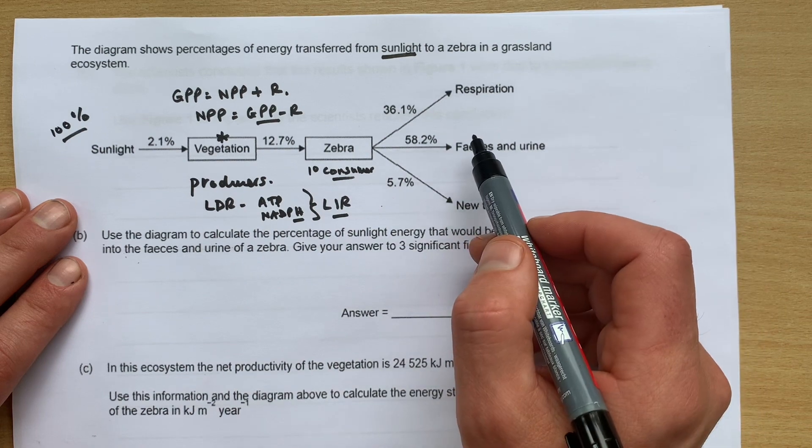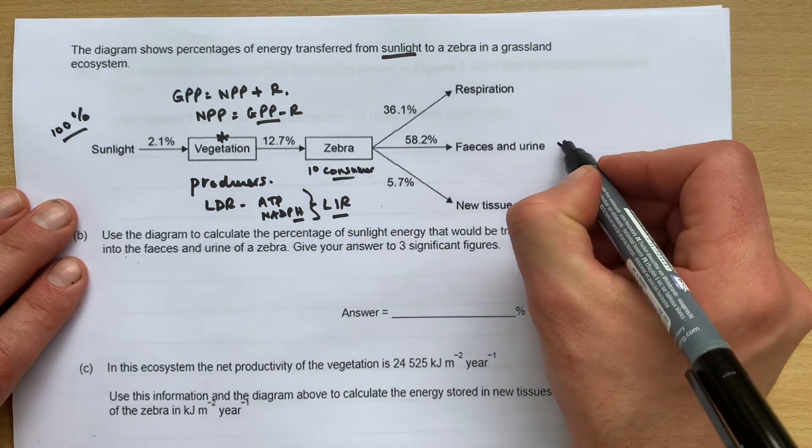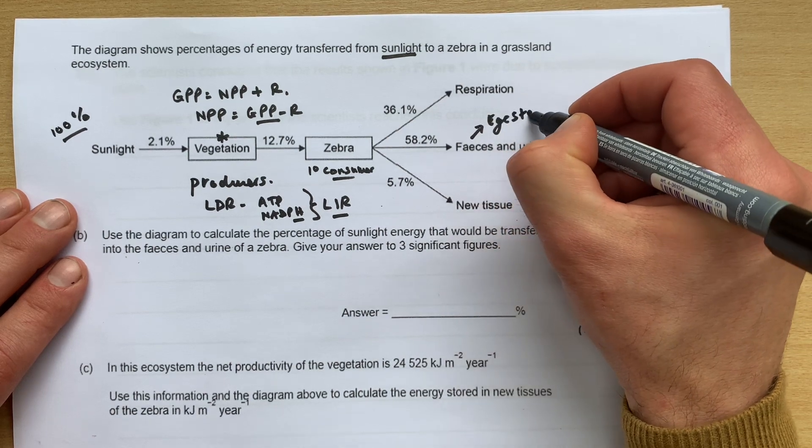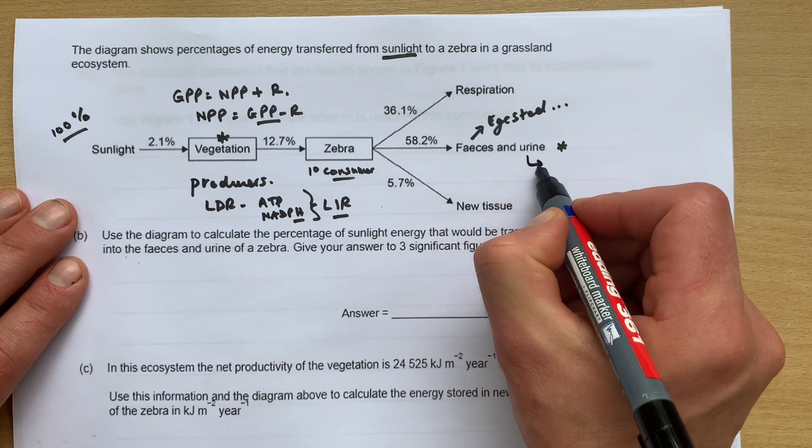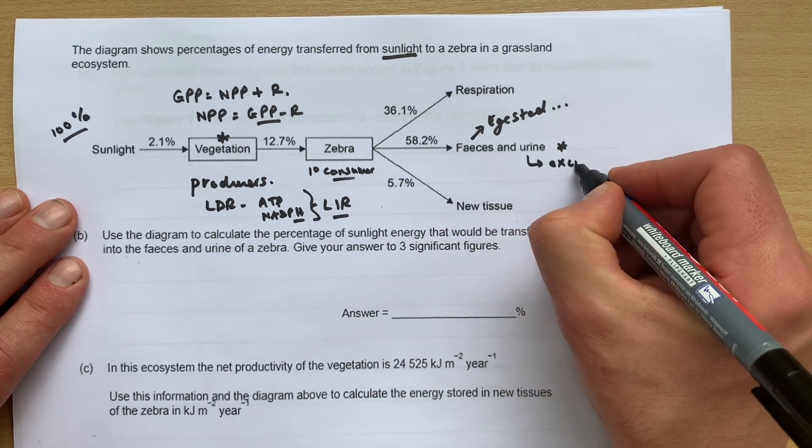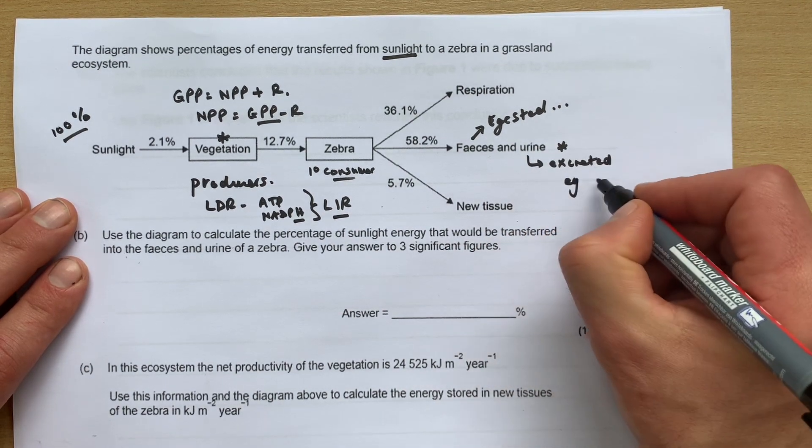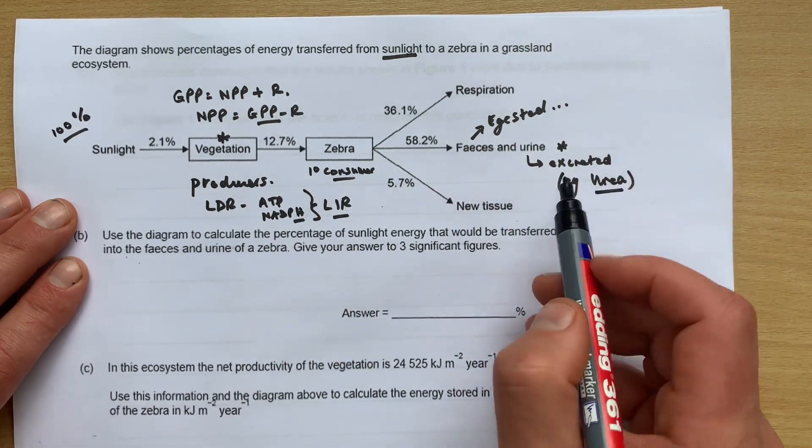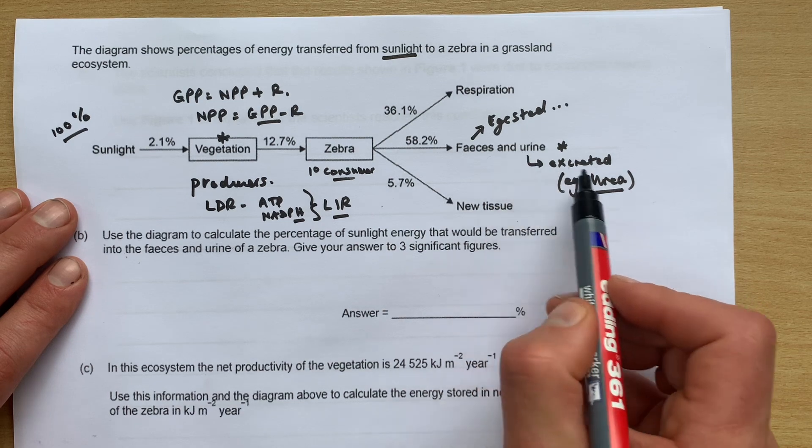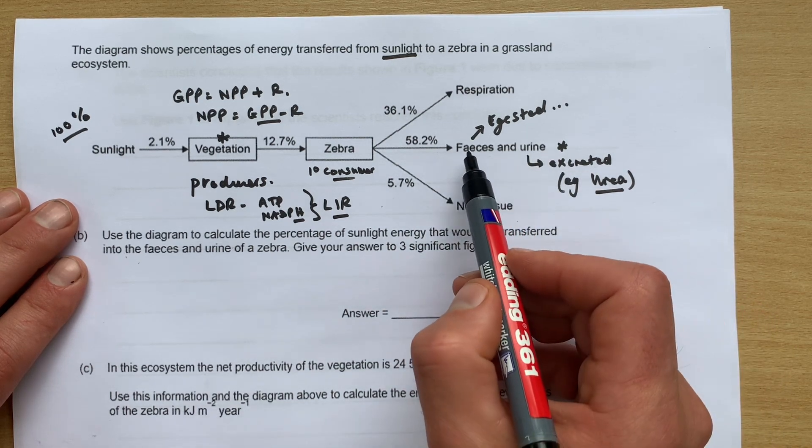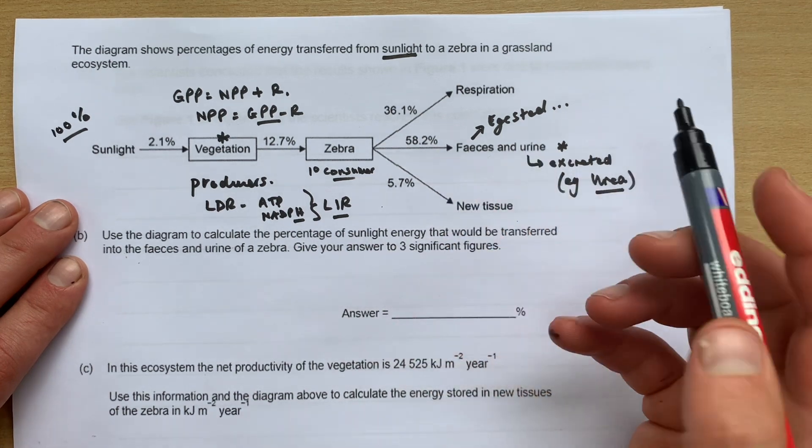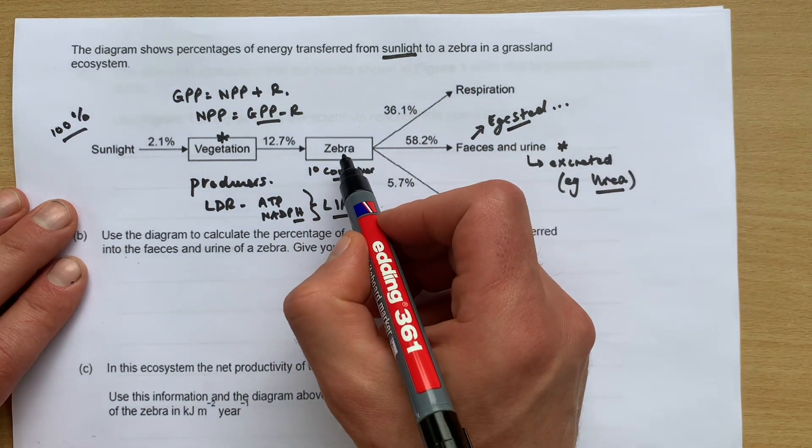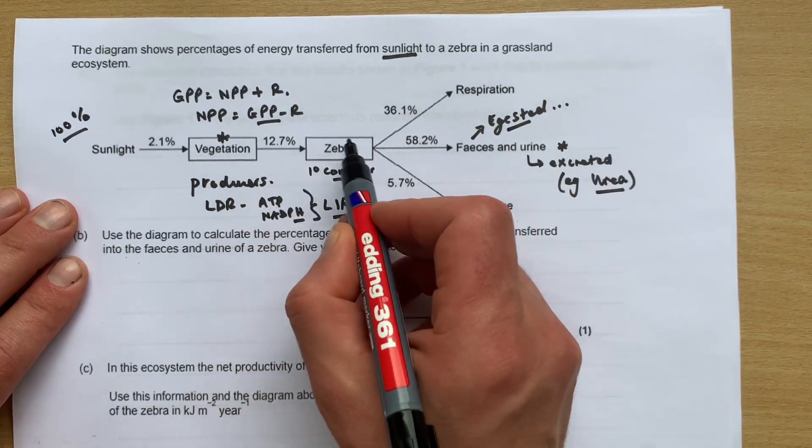And of this energy in the zebra, 58.2 percent is lost as faeces and urine. So faeces is just egested material like cellulose and fiber, and the urine is excreted molecules like urea. So any metabolic waste is always excreted, and that would be urea in the urine, and any non-digested food like cellulose would be egested out as faeces.